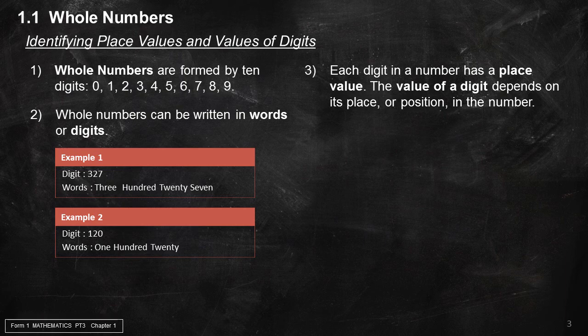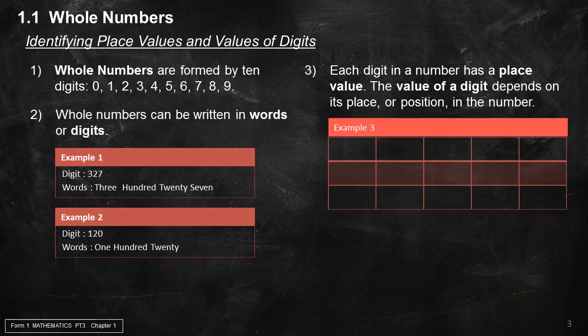Each digit in a number has a place value. The value of a digit depends on its place or position in the number. Example 3 — number 7,369: the place value of 7 is thousands, value is 7,000; 3 is hundreds, value is 300; 6 is tens, value is 60; and 9 is units, value is 9.